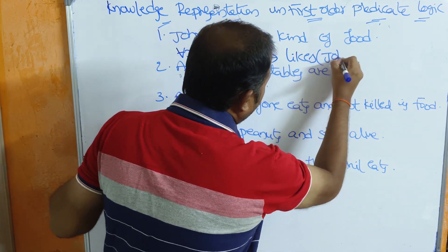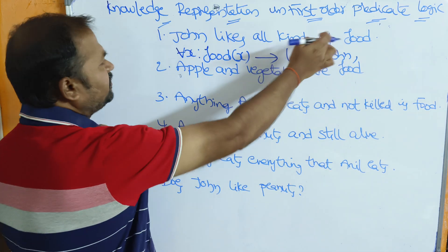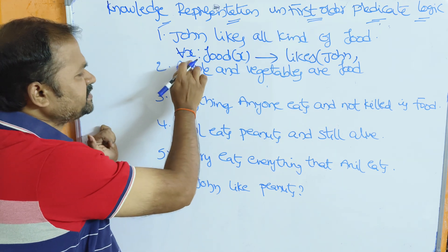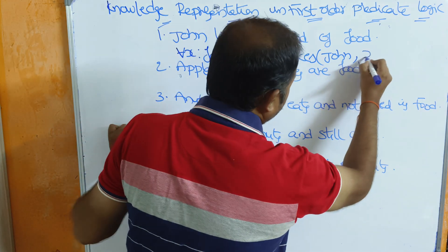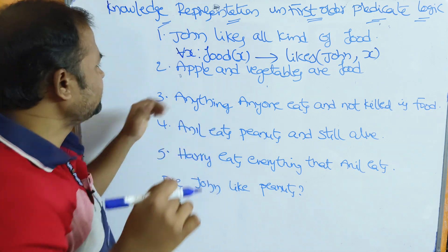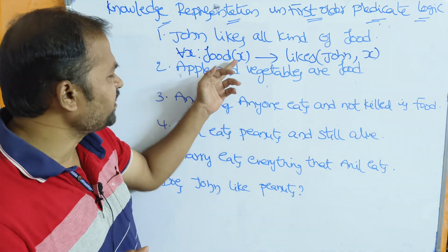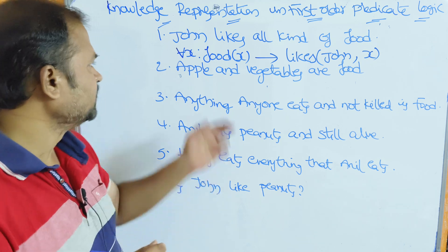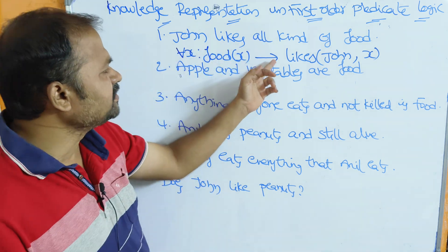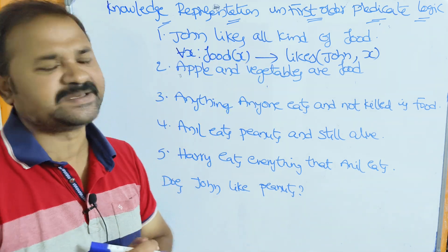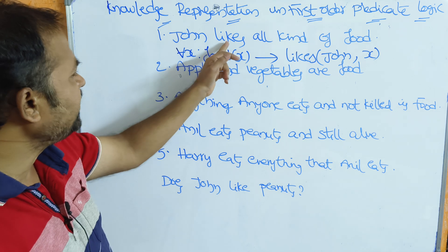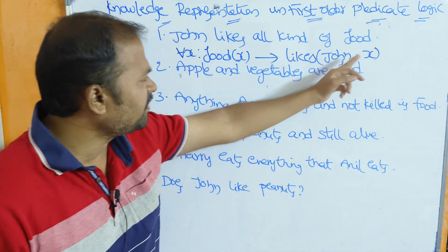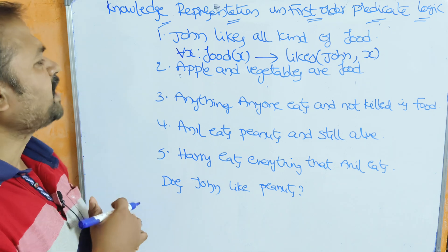For the formula: for all x, food(x) implies likes(John, x). Here the first argument is John, and the second argument is x, representing all kinds of food. So the full formula is: for all x, food(x) → likes(John, x).